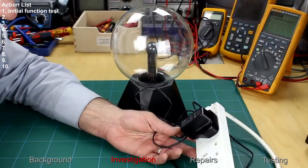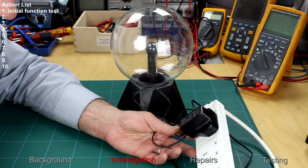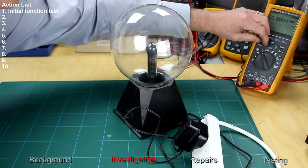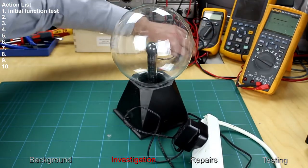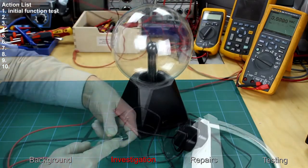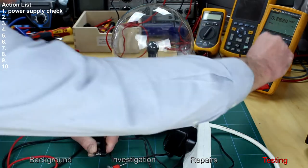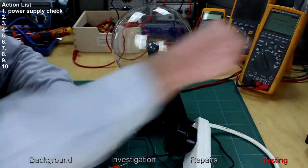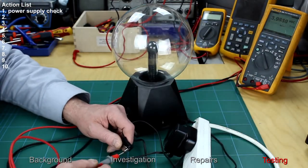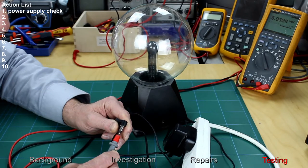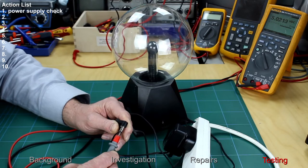It doesn't say if this is AC or DC output. So I'm going to select AC first and see what we've got. Nothing. Let's try DC. Okay, so it's DC output, 5 volts, and that is working.